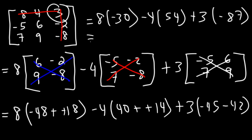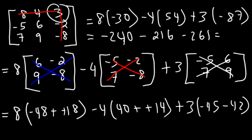8 times 30 is 240. And then 4 times 54 is 216 — because 4 times 50 is 200 and 4 times 4 is 16, so 200 plus 16 is 216. And then 3 times 87: 3 times 80 is 240, 3 times 7 is 21, so that's 261. So now let's add the three negative numbers: negative 240 minus 216 minus 261 adds up to negative 717. So this is the final answer.